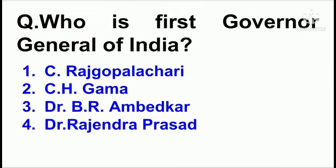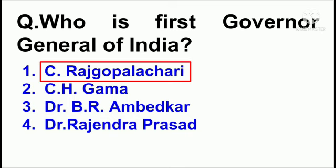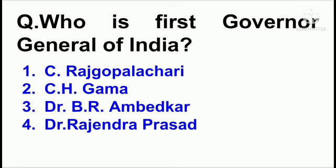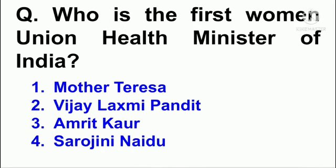Your fifth question is: who is the first governor general of India? The answer is C. Rajagopalachari. Your sixth question is: who is the first woman union health minister of India? The answer is Amrit Kaur.